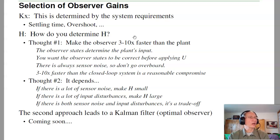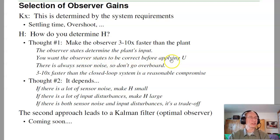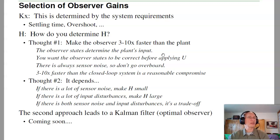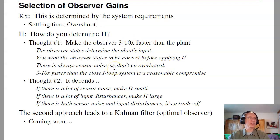One camp says you should make the observer three to ten times faster than the plant. The argument is that the observer states determine the plant's input, so you want the observer states to be correct before applying the input. You want the observer to converge quickly, and then the plant dynamics take over and you start tracking. But there's always some noise, so don't go overboard. The faster you make the observer, the higher H becomes, and the more noise you inject into the system. A nice trade-off is three to ten times faster.